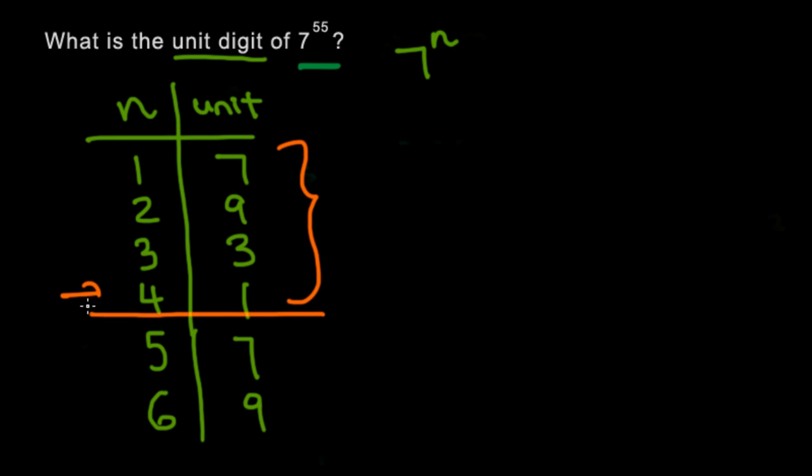So what this means is that 7 to the power of 4 is going to end in 1. 7 to the power of 8 is going to end in 1. The same with 7 to the power of 12, 7 to the power of 16, all the way up to 7 to the power of 52.